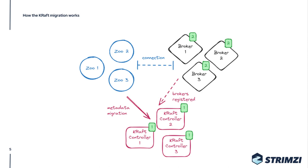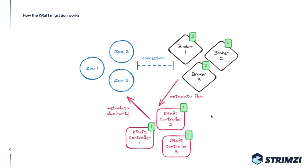The leader starts the migration: the active controller copies all the ZooKeeper metadata from the ZooKeeper ensemble to the cluster metadata topic. In KRaft, the cluster metadata is then replicated to the other follower controllers. Once the metadata migration ends, the metadata flow goes through the KRaft controllers and not ZooKeeper anymore. If we create a new topic with the Kafka CLI tool, all information goes through the KRaft controllers — stored in the cluster metadata topic first, but also copied to ZooKeeper during this dual-write phase.